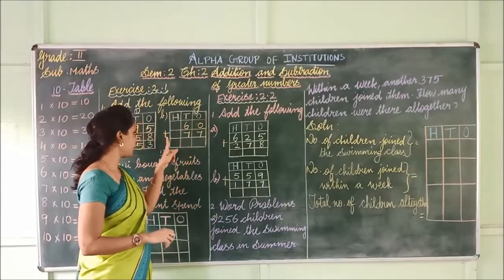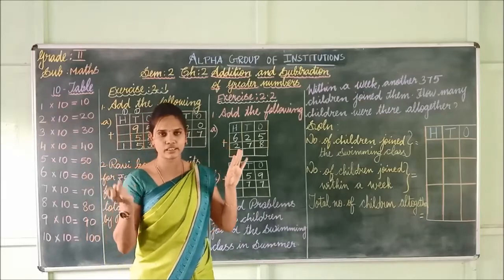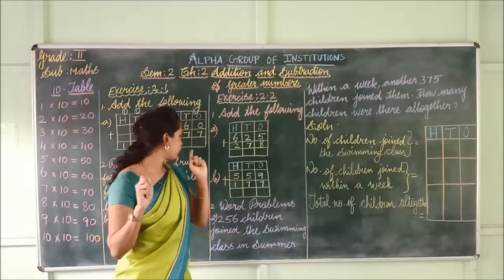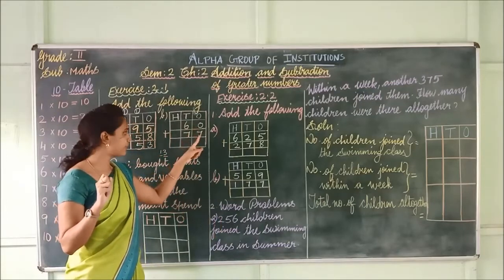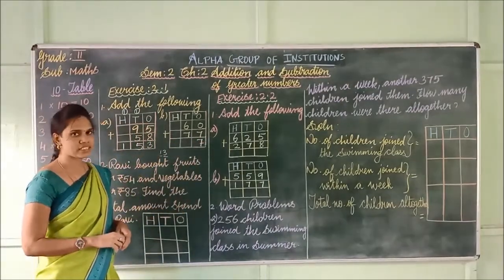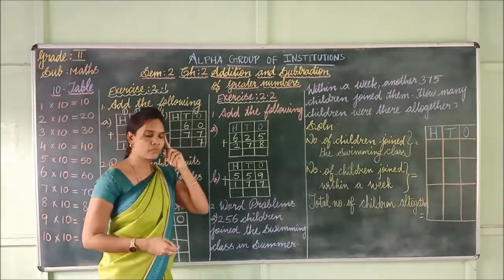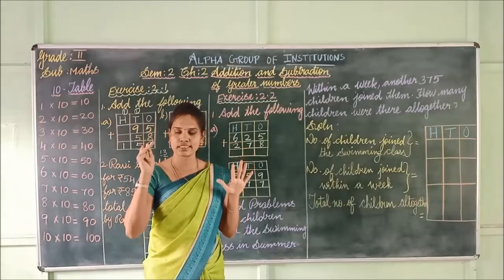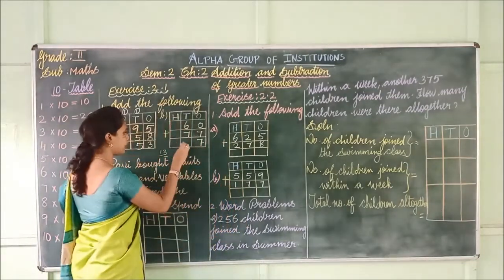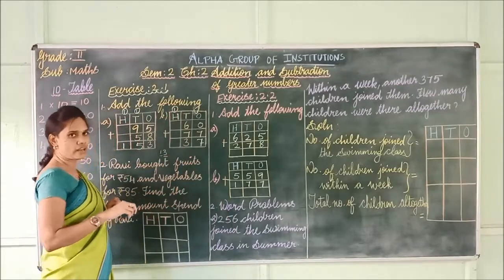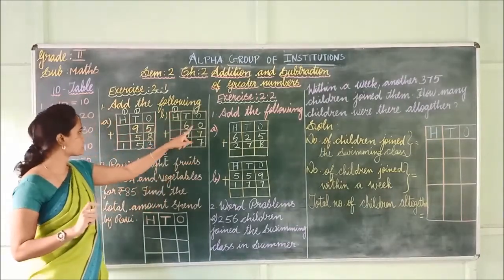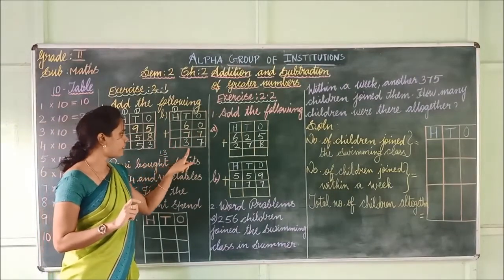See the second problem. In ones place: 0 plus 7. Keep 0 in the mind, take 7 fingers: 1, 2, 3, 4, 5, 6, 7. If you add any number to 0, you get the same number. So 0 plus 7 is 7. Shall we move on to tens place? 6 plus 7: keep 6 in the mind, take 7 fingers — 7, 8, 9, 10, 11, 12, 13. Write 3 here and carry 1 to the next place. Here there are no numbers, so write the carry over number as it is. So 60 plus 77 is equal to 137.